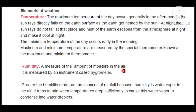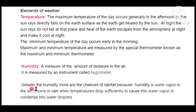The next element is humidity. Humidity is the amount of moisture — meaning water vapor — in the air. Just as maximum and minimum thermometers are used to measure temperature, an instrument called the hygrometer is used to measure humidity. This is a very important point that often appears in exam questions. Greater the humidity, more are the chances of rainfall.